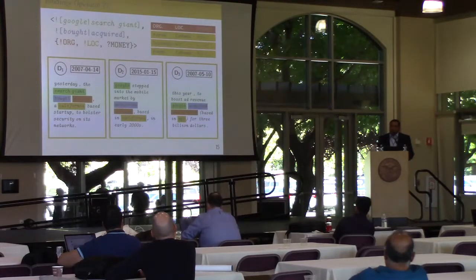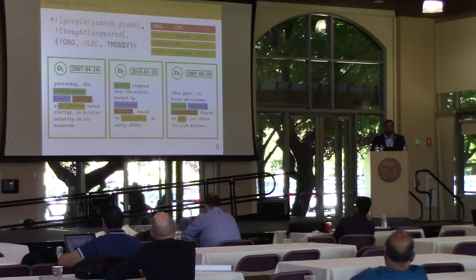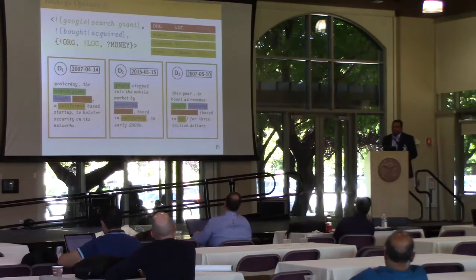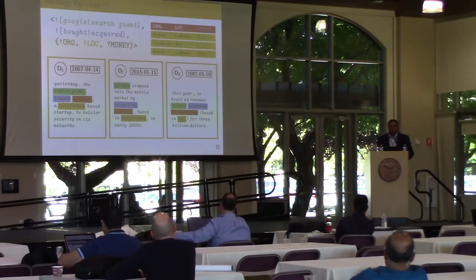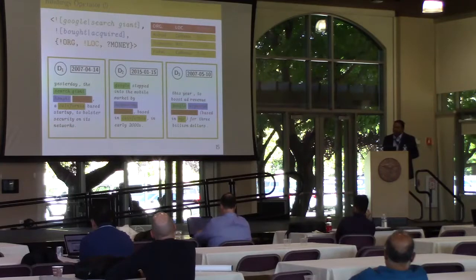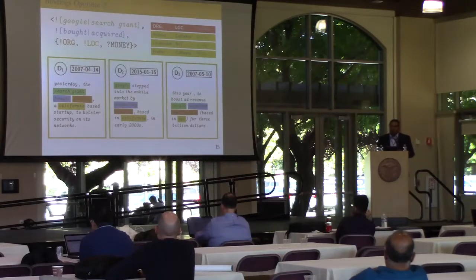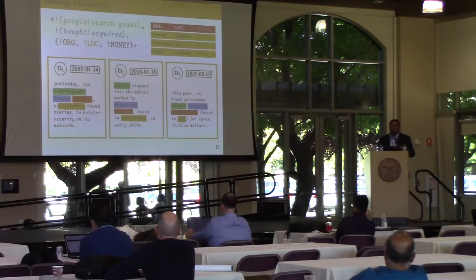The first important operator in our query language is the binding operator. The binding operator specifies the word sequences or annotations to be matched in the text. In this example, the binding operator first specifies, as a disjunctive query, all surface forms of Google—such as Google or search giant. Following the mention of the company, you have paraphrases for the predicate acquisition, such as bought or acquired. Following this sequence, it finds a mention of an annotation which can be organization, location, or money. This specifies the template or structure that needs to be spotted in the text documents.